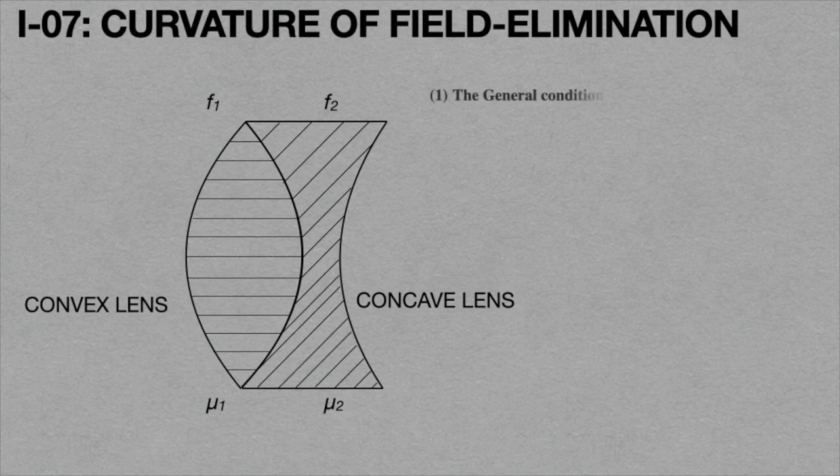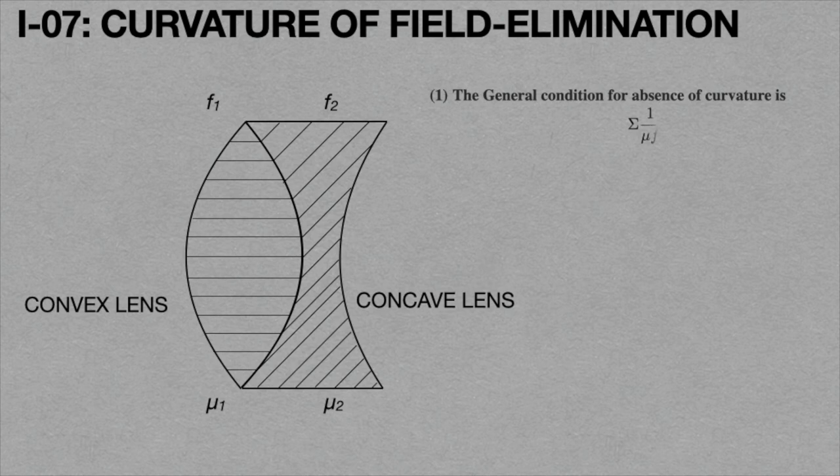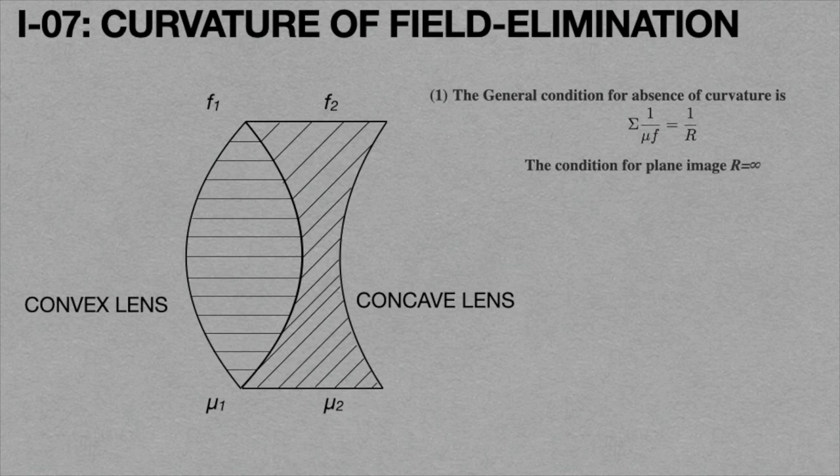The general condition for curvature of field is sigma 1 by mu F equals 1 by capital R. Here mu is the refractive index, F is the focal length of the lens, and R is the curvature. For a plane image, R becomes infinity.